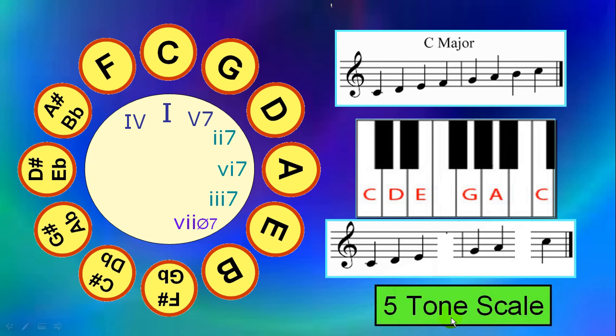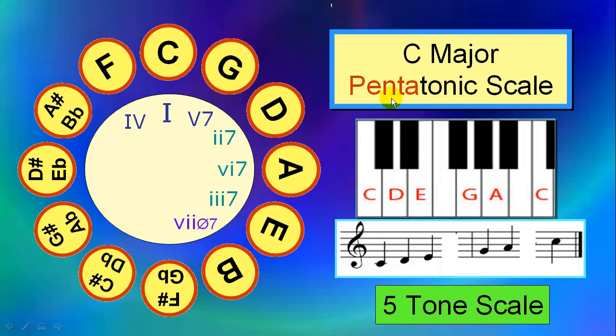And this is a 5-tone scale. And that's why we call this a pentatonic scale. It's spelled like this, penta, meaning that there are 5 tones in this scale.